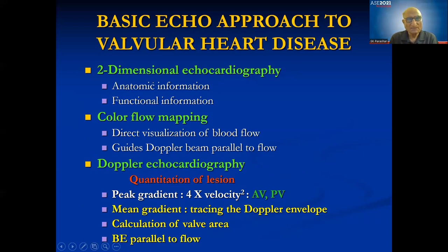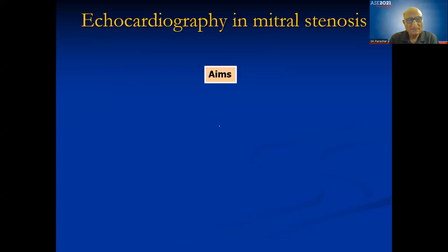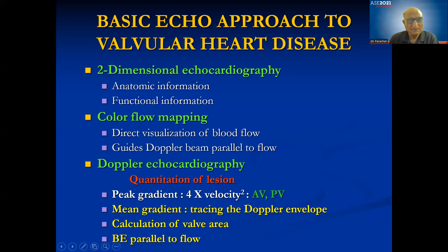In basic evaluation of valvular heart disease, start with 2D echo for anatomic information: chamber size, wall thickness, any calcification or pericardial effusion, then ejection fraction. Then color flow mapping to direct visualization of blood flow and guide parallel alignment. Doppler provides quantitative data — peak gradient is more commonly used in aortic and pulmonary valve lesions. Calculate valve area, measure gradients, and always be completely parallel to flow.